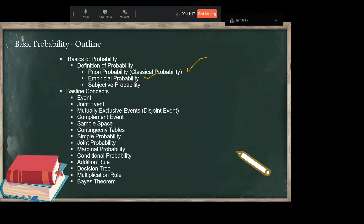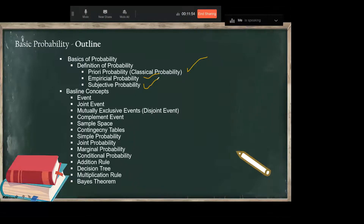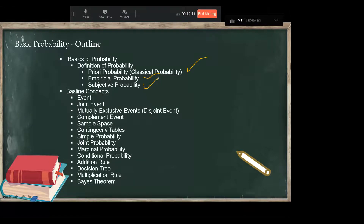Subjective probability is totally based on your skills and observation of certain things. For example, if you are a geologist — a person who finds out what is beneath the surface of the earth — based on your existing study, experience, and skill, you will study the nature of the surface of the soil and tell me the chances that gas or petroleum products are underneath the surface. That's purely based on your knowledge, skills, and experience.